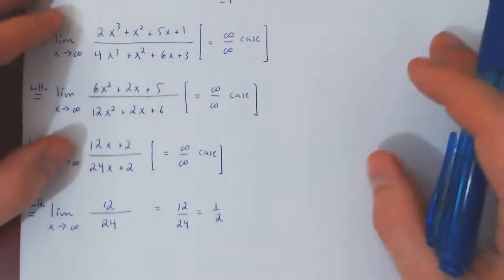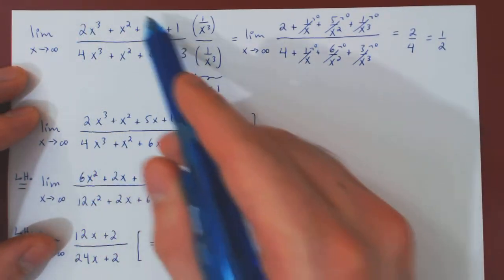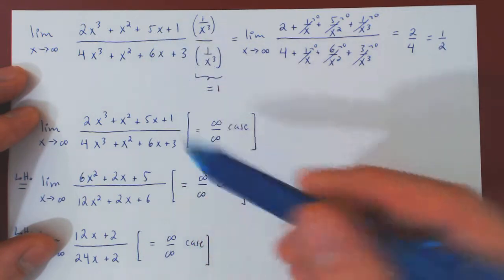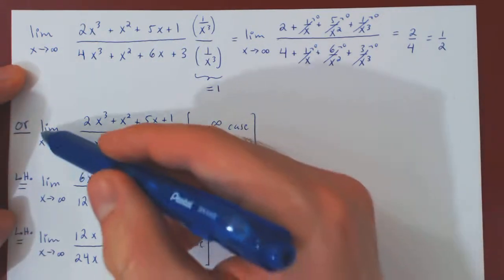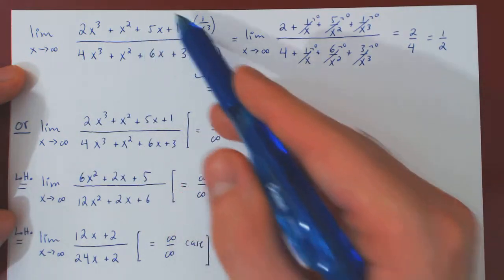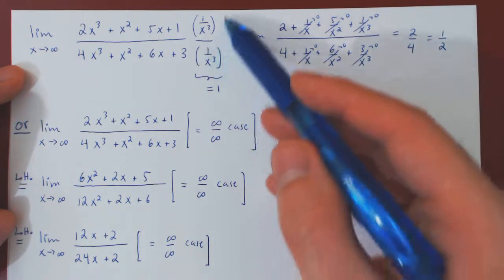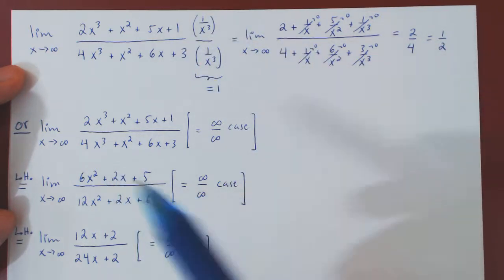So the lesson here, hopefully, is clear. When you have a limit that is elementary, even though it yields a case where you could use L'Hôpital's rule, do not use L'Hôpital's rule if an elementary method does apply. Always go with the elementary technique over L'Hôpital's rule.